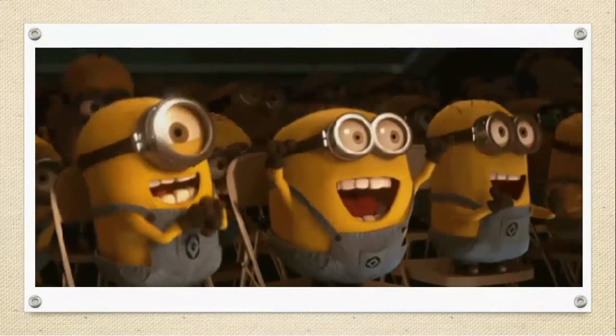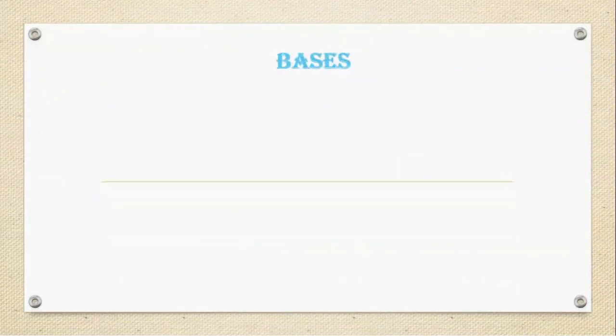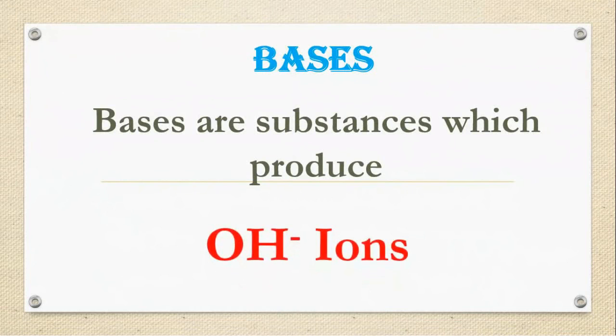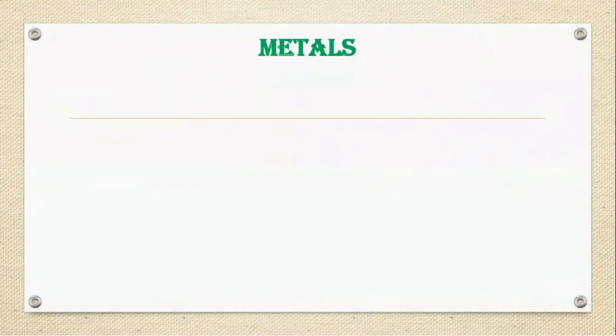Now, let us see base. What is meant by base? Bases are substances which produce OH minus ions. OH is hydroxide. Before learning about base, we need to have some idea about metals.